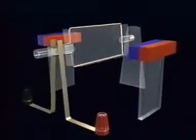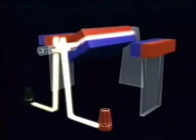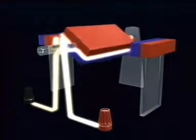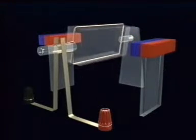While current flows, the coil of wire becomes an electromagnet, with a red north pole on top and a blue south pole on the bottom.